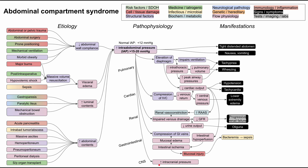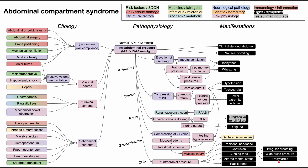The last affected system is the central nervous system. Increased intra-abdominal pressure transmits through the spinal canal to raise intracranial pressure. This results in positional headache, confusion, altered mental status, and papilledema on eye exam. Cushing's triad may also appear — bradycardia, widened pulse pressure, and irregular Kussmaul respirations. CNS involvement is among the most concerning outcomes of abdominal compartment syndrome.